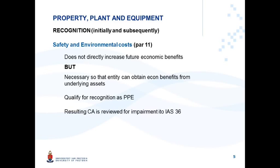Paragraph 11 specifically ensures that we will not overstate property, plant, and equipment by capitalizing these costs. The resulting carrying amount that has now increased when you added these costs has to be reviewed for impairment in terms of IAS 36. This standard ensures that you do not carry property, plant, and equipment at an amount higher than the future economic benefits it is associated with.